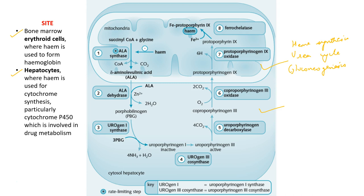There are eight steps in the cycle. The first step and the last three steps are the ones which occur in the mitochondria, whereas all the other steps occur in the cytoplasm.